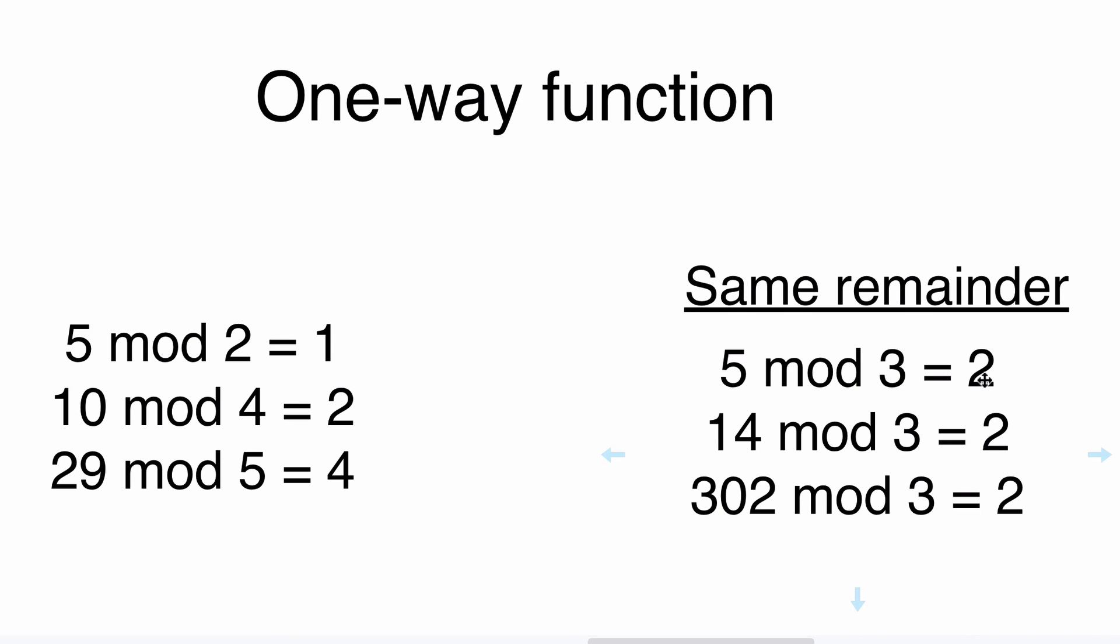And that is a one-way function. Again, we can calculate the result if we know two numbers, but if we know those numbers in this example, three and two, we are not able to get this number.